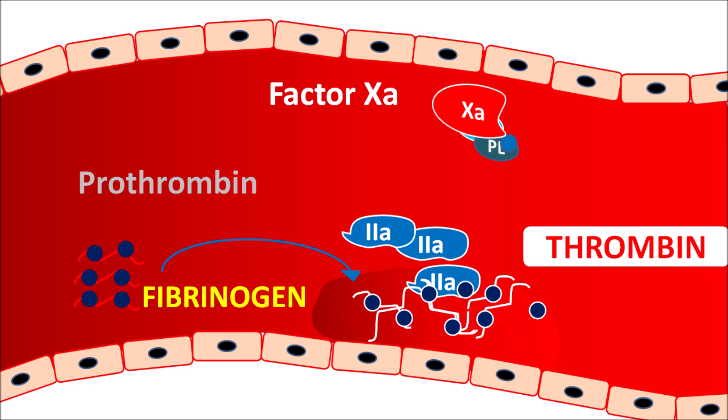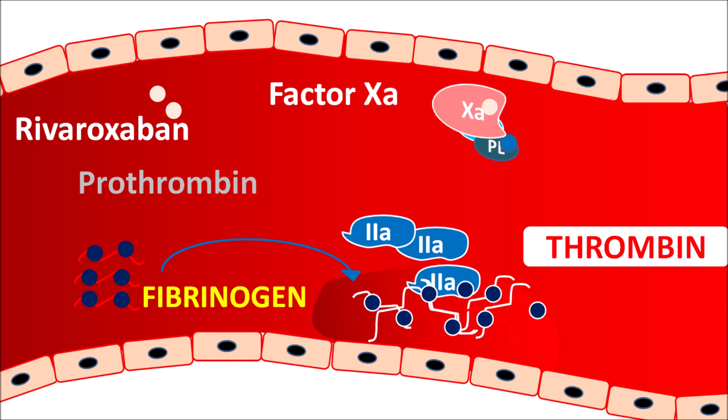This meshwork is responsible for formation of a dense clot which increases thrombotic events. Now rivaroxaban is an anticoagulant — it acts on factor 10a, thereby reducing its activity. This results in decreased clot formation, thereby reducing thrombus formation. In this way rivaroxaban can be used as an anticoagulant.